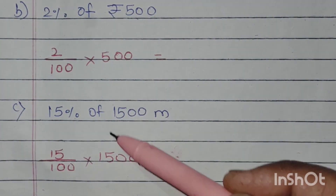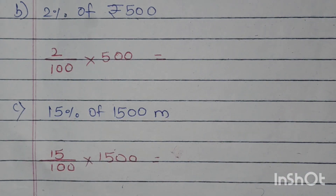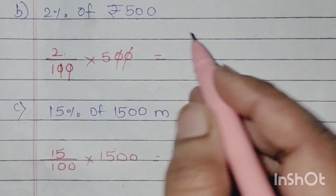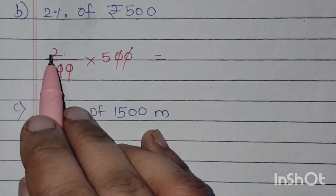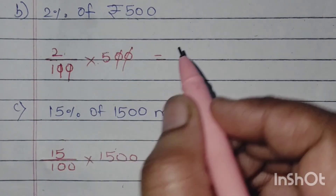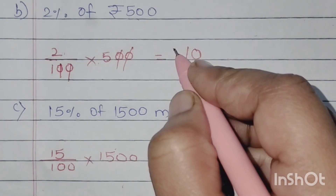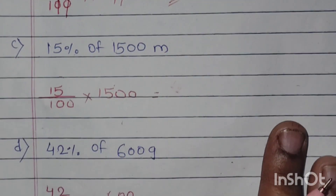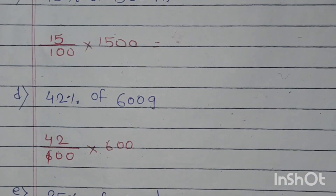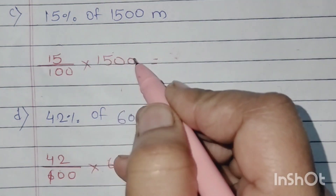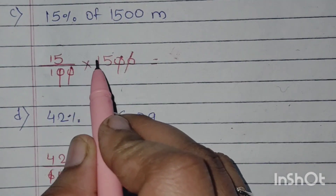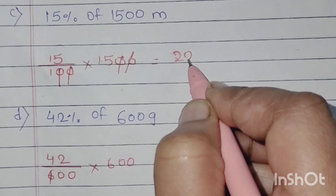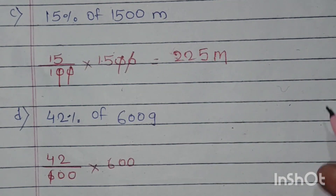Next, part b — I have written this example with the other examples because this video is longer. So 2 upon 100: the zeros get cancelled, and the numbers on top we multiply, so 2 into 5 is 10. Okay, this unit is rupees — the unit is very important. Next, 15% of 1500 metres: again the zeros get cancelled and 15 into 15 — आप पीछे वाले page पर जाके multiply करो — आपको answer मिलेगा 225 metres.